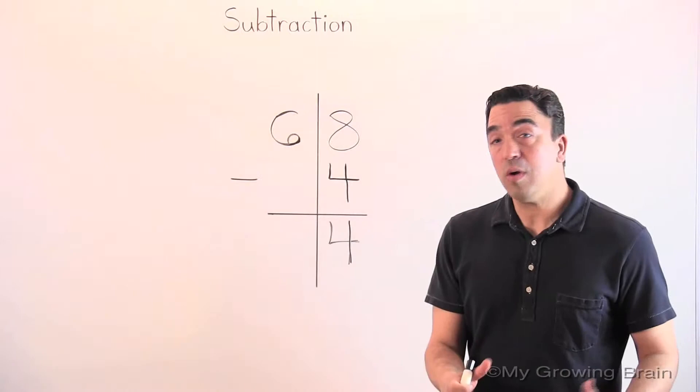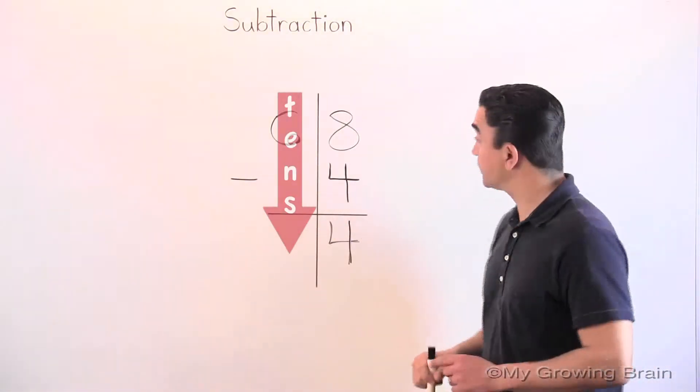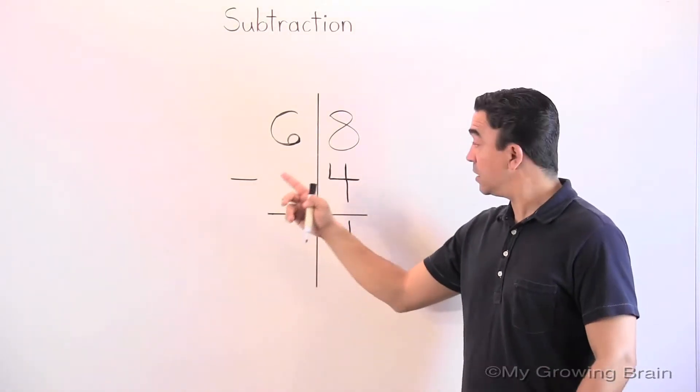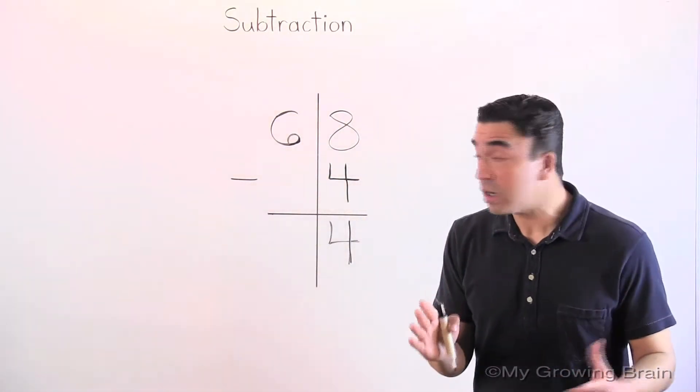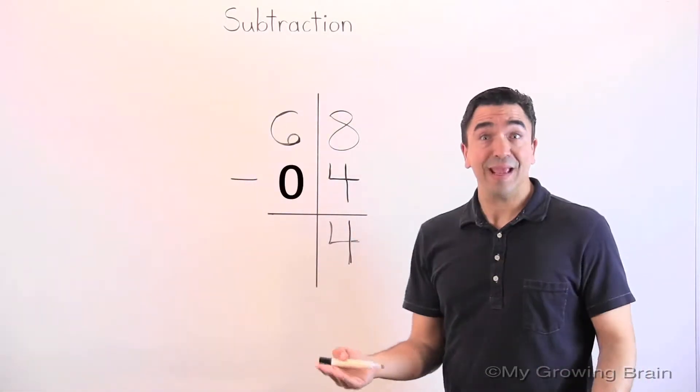Now, we move to the tens place. 6 minus nothing or 6 minus 0 is 6.